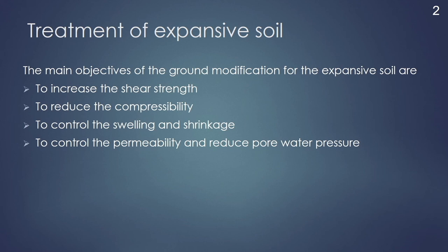The second objective is to reduce the compressibility. As we know that the expansive soil contains a lot of water in it, therefore it will be highly compressible. We will reduce the compressibility of the soil such that settlement due to load will be minimum. And also, the expansive soil undergoes a large amount of swelling and shrinkage. The swelling and shrinkage produce differential settlement or differential heaving, and that leads to damage to the structure. Therefore, it is quite essential to control the swelling and shrinkage. The third objective of any ground modification is to control its swelling and shrinkage behaviour.